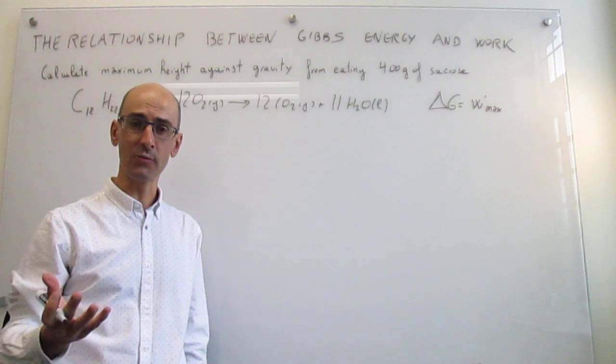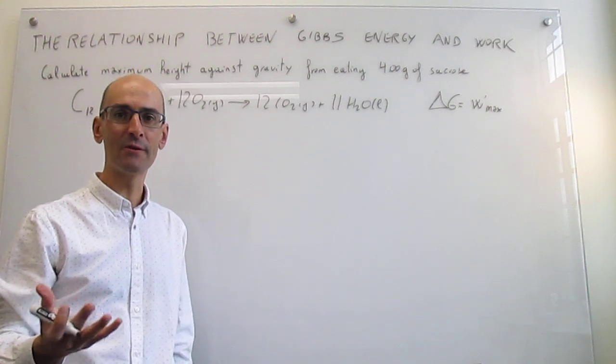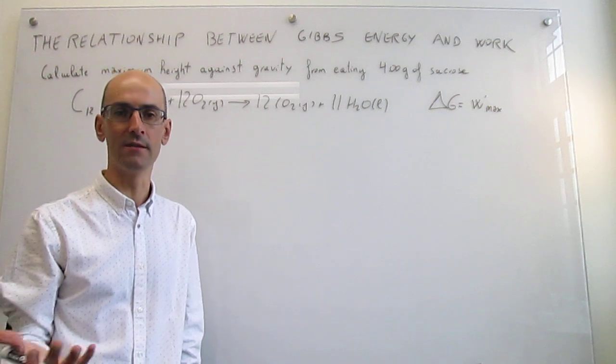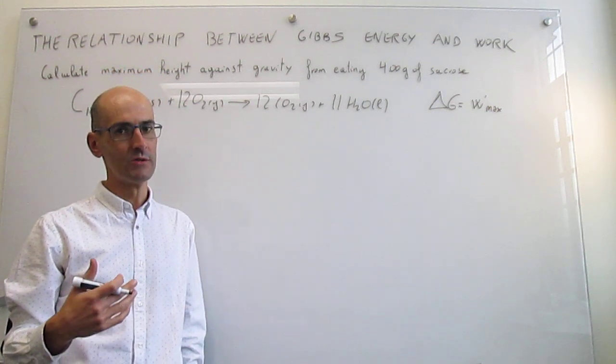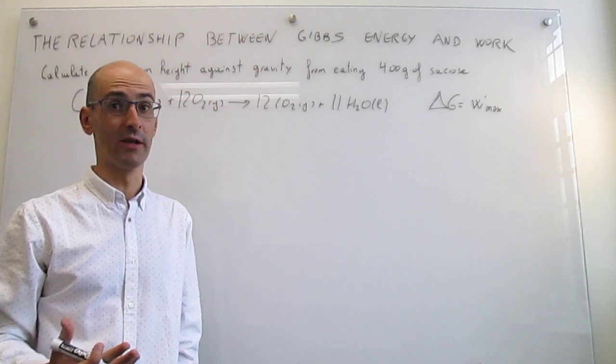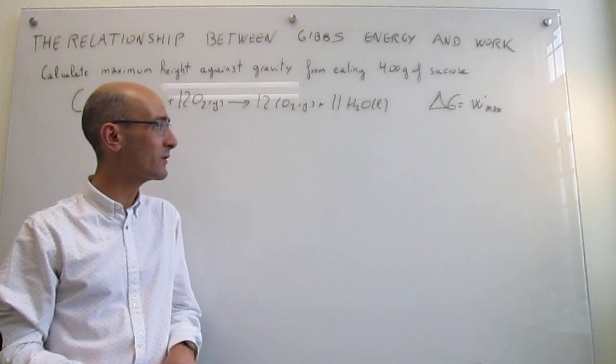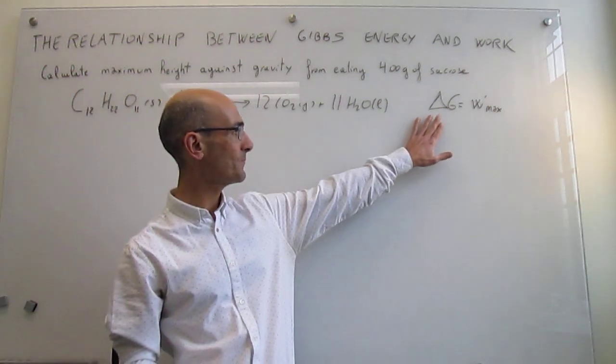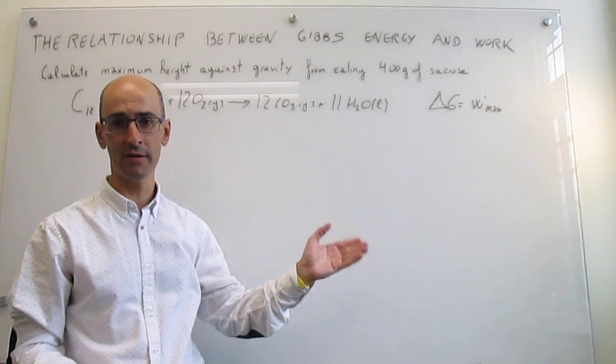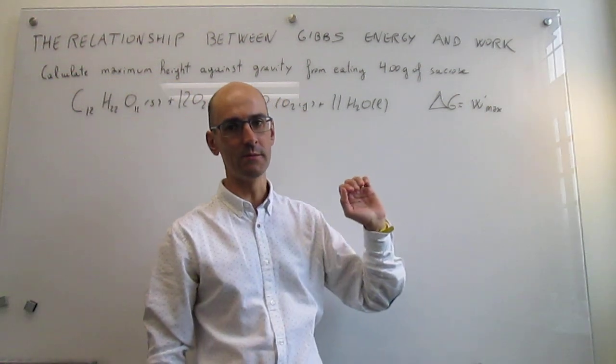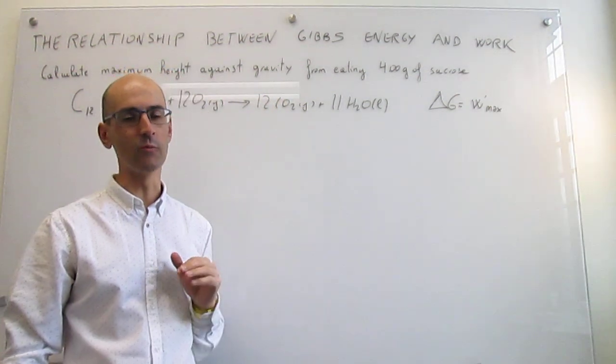Notice that work against gravity is a non-expansion work if it's done by flexing muscles. In that flexing of muscles there's no expansion, so that work against gravity will be non-expansion work. The strategy is then pretty obvious. We simply have to calculate the change in Gibbs energy from burning the 4 grams of sucrose, and then that will be the maximum work against gravity that we can do from jumping.